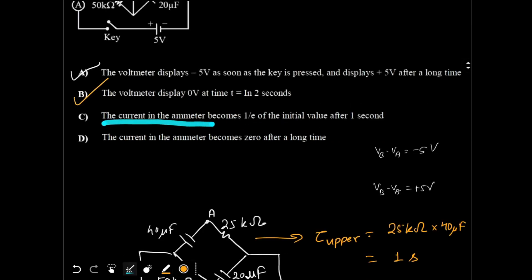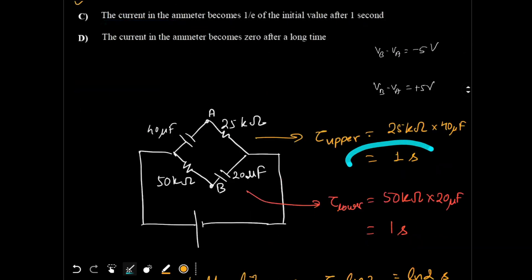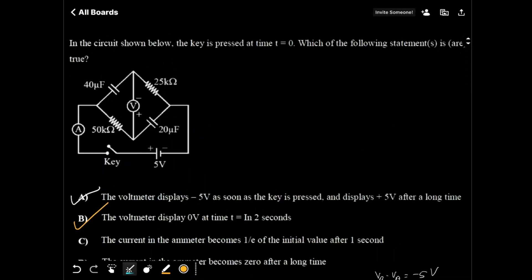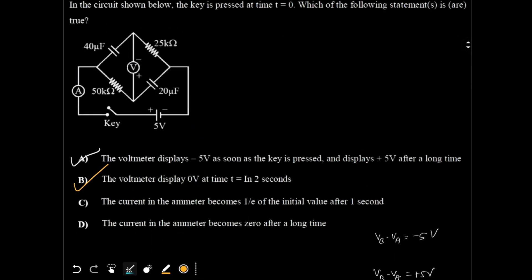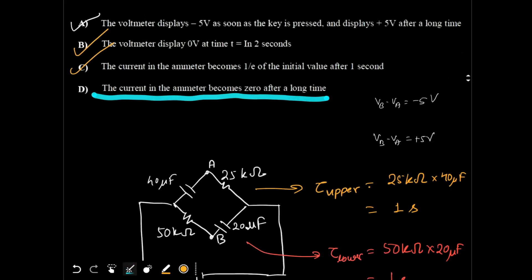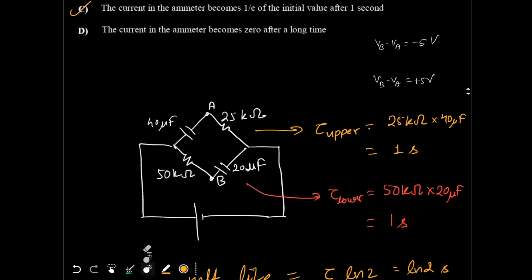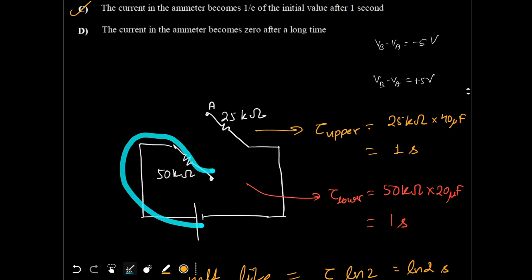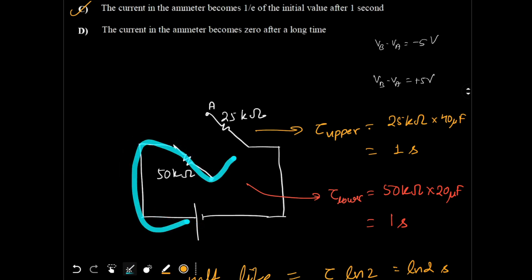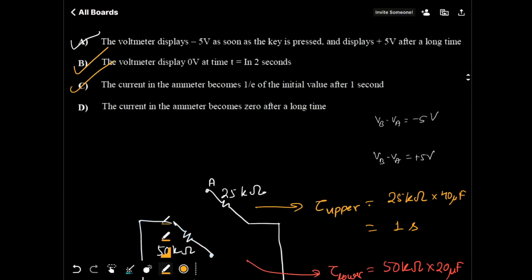Option C says the current in the ammeter becomes 1 over e of the initial value after 1 second. We already calculated the time constant is 1 second, so after 1 second the current becomes 1 over e of its initial value — option C is correct. Option D says the current in the ammeter becomes 0 after a long time. After a long time, the capacitors achieve steady state, so no current flows and the circuit is effectively open. So option D is also correct. All four options are correct.